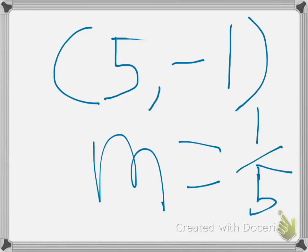Okay, so this is what is given to us. We have the coordinate point (5, -1) and m equals 1/5.